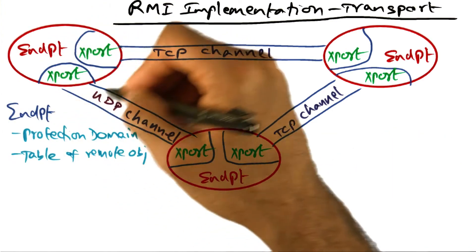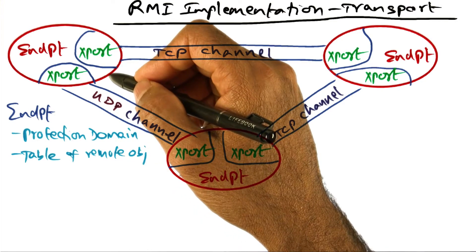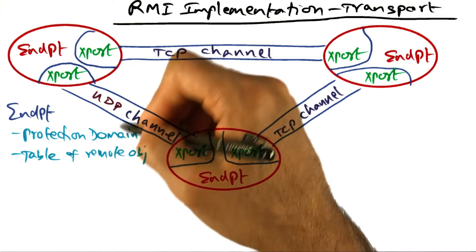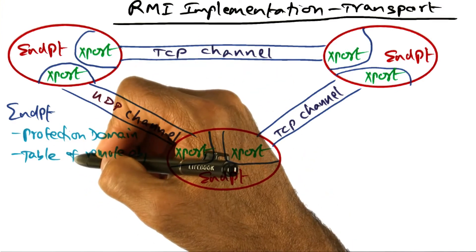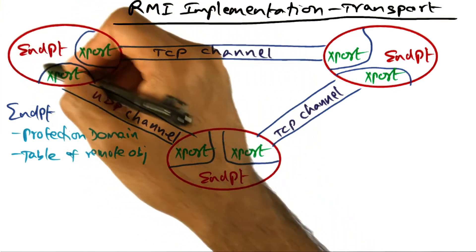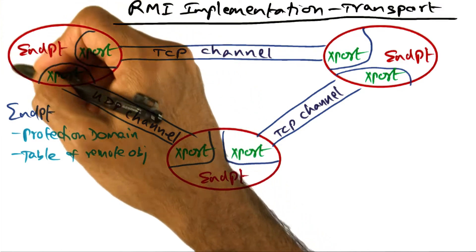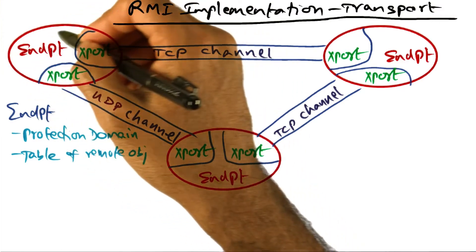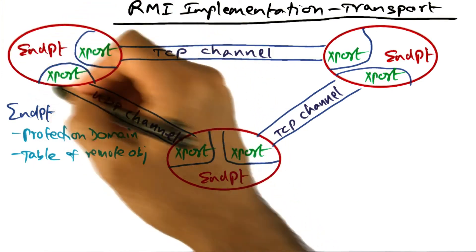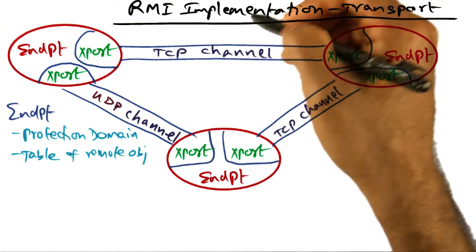Endpoint you can think of as nothing but a protection domain, or you can say it is a Java virtual machine. It has a table of remote objects that it can access. This gives you a protection domain or a sandbox for execution of server code or client code. That's what endpoint is — it's basically a protection domain.